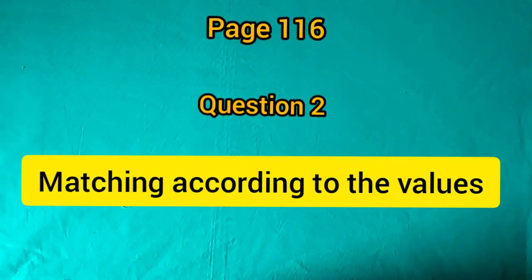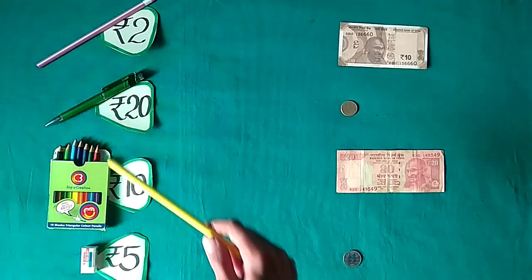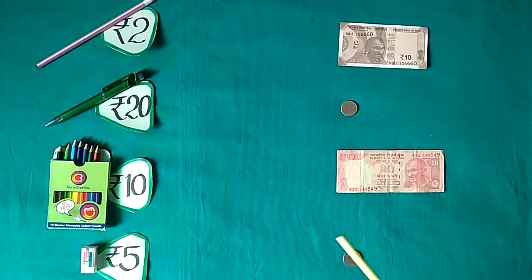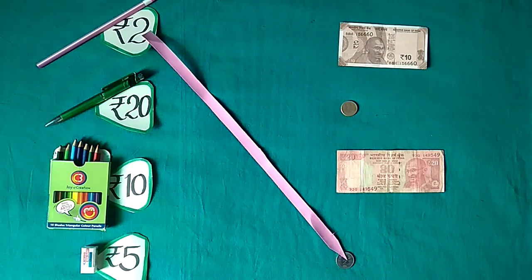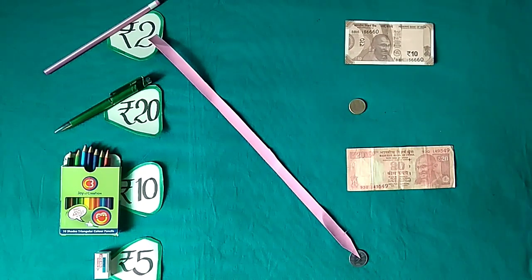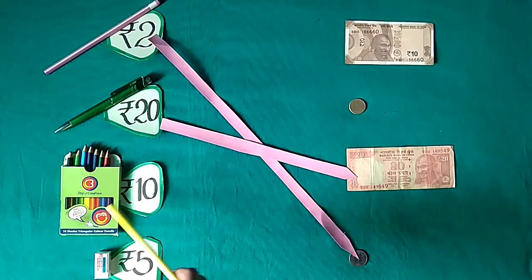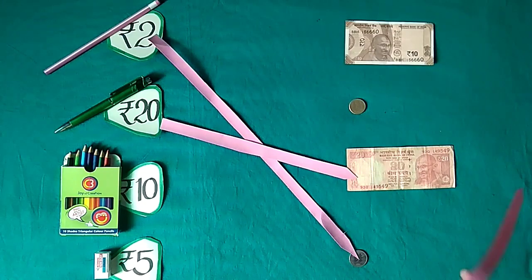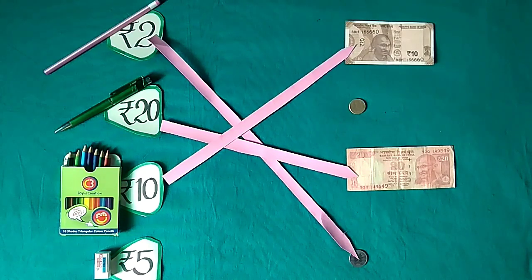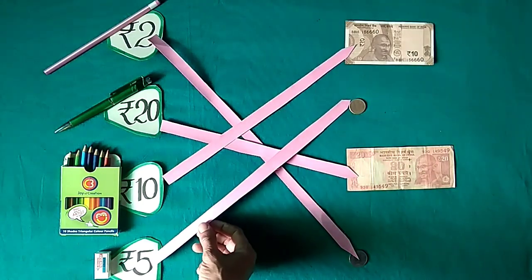Let us solve some questions based on these examples. The price of a pencil is 2 rupees, so we match it with the coin of 2 rupees. The price of a pen is 20 rupees, so we match it with the note of 20 rupees. The price of color pencils is 10 rupees, so we match it with the note of 10 rupees. The price of an eraser is 5 rupees, so we match it with the coin of 5 rupees.